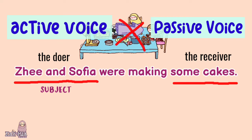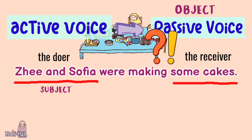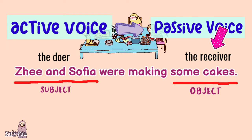Remember, not all active voice can be changed into a passive voice. Only the one with an object can be converted into a passive voice. Do you think you know the object of this sentence? Yeah, the object of this sentence is the receiver. So we can conclude that this sentence can be changed into its passive voice.